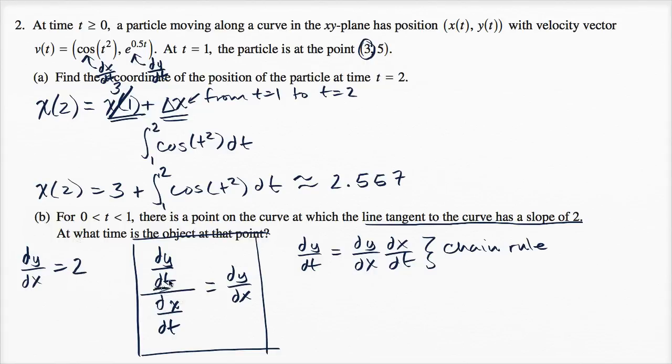The derivative of y with respect to t is e^(0.5t). Divided by the derivative of x with respect to t, which is cos(t²). So this is the derivative of y with respect to x, and we need to figure out at what t does this equal 2.